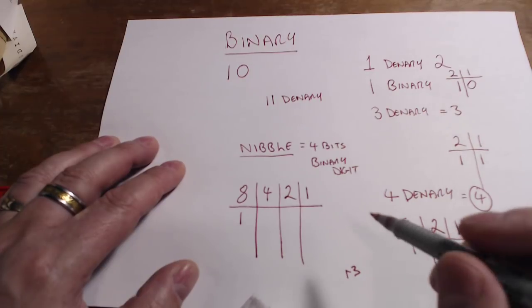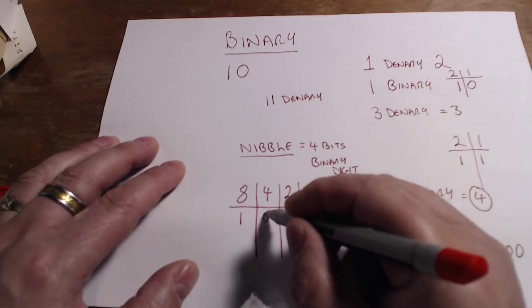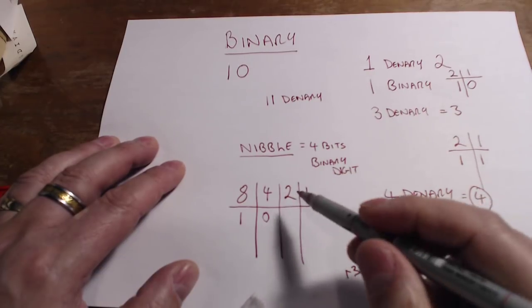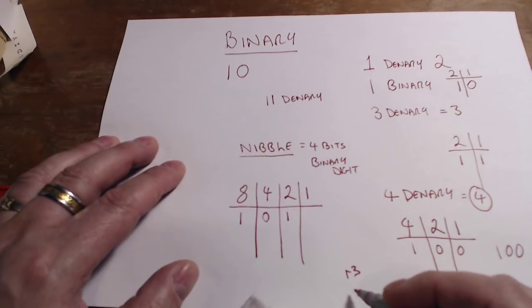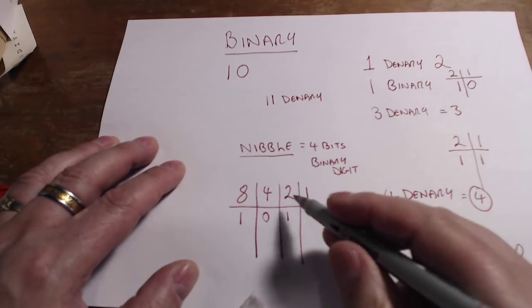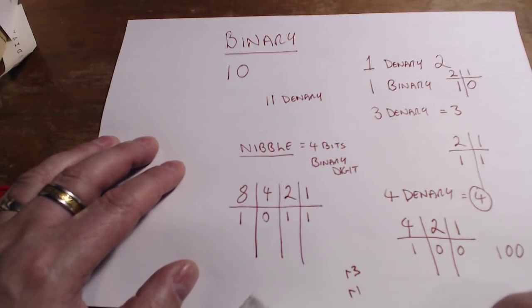Does four go into three? It doesn't, so it's a zero. Now does two go into three? Two goes into three once and it's got a remainder of one. One goes into one once. There we go, so my number eleven...